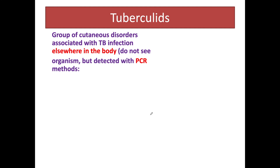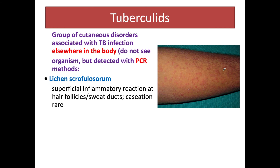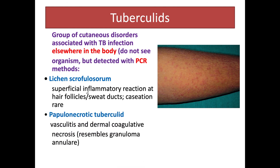Tuberculides are a group of cutaneous disorders associated with TB infection elsewhere in the body. The organism is not seen under the microscope with staining; they are detected by PCR methods only. Clinically we see multiple small red eruptions over the skin. Lichen scrofulosorum shows a superficial inflammatory reaction at hair follicles and sweat ducts, with caseation being very rare. The second form, papillonecrotic tuberculide, shows vasculitis and dermal coagulative necrosis, and it resembles granuloma annulare.